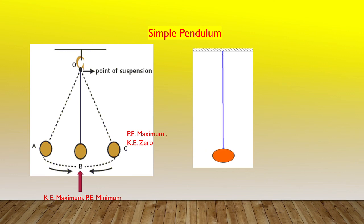After a momentary rest, the bob once again retraces its path from C to B and B to A. Thus, we see that the bob oscillates in a circular arc with the center at the point of suspension O.